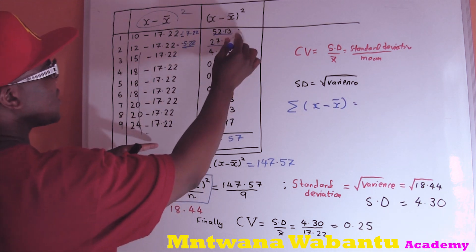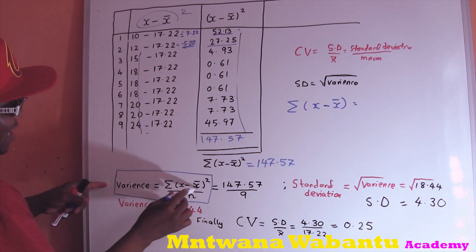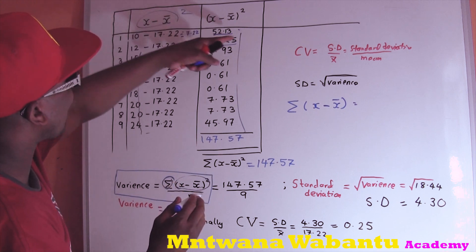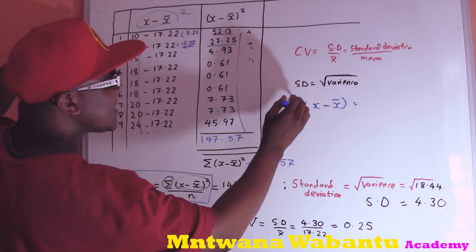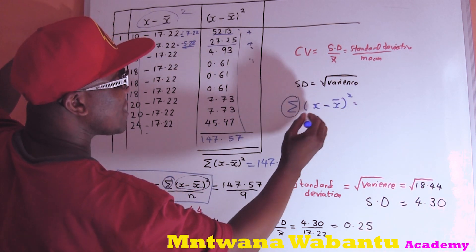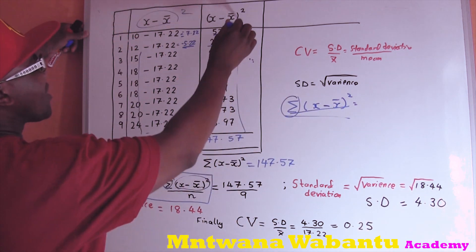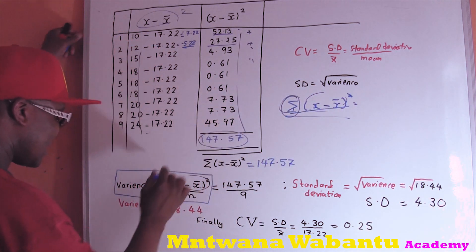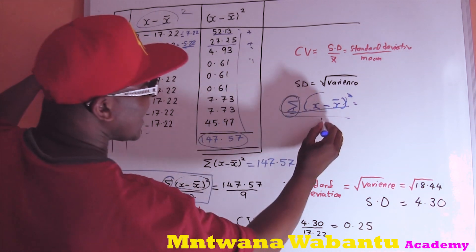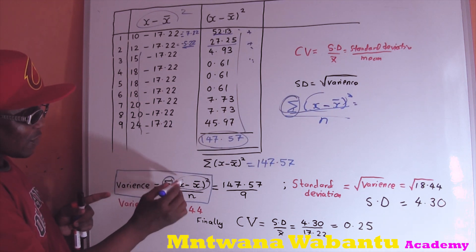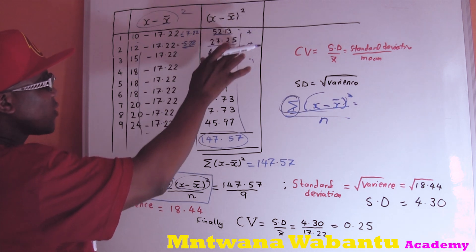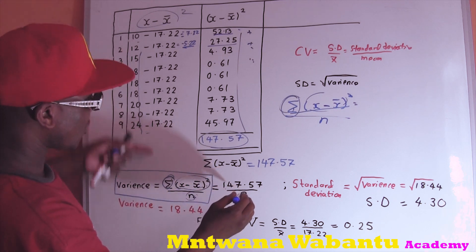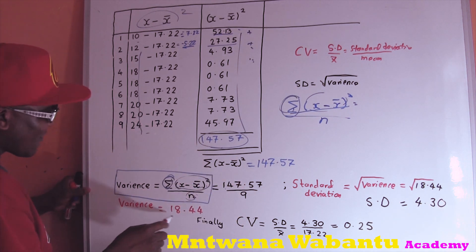After computing (x minus mean) squared for all data values, you sum all those squared differences together. That's what the summation sign means — add them all up. Then you divide by n, the total number of values, which is 9. That gives you the variance. So variance equals the sum of (x minus mean) squared, divided by n. After doing this, the variance comes out to 18.44.